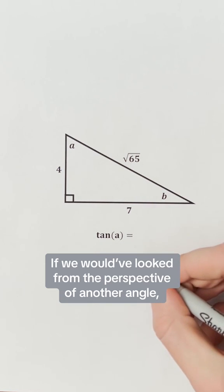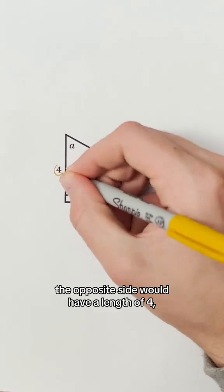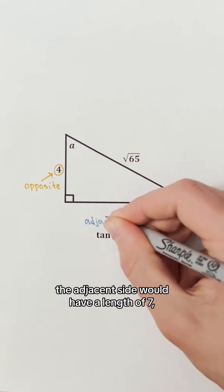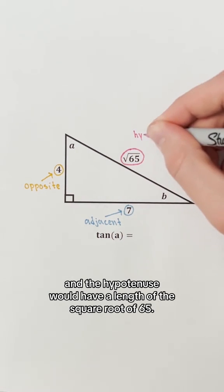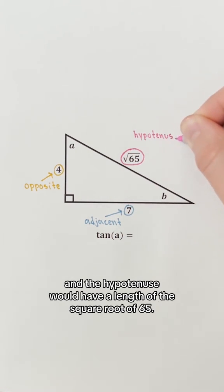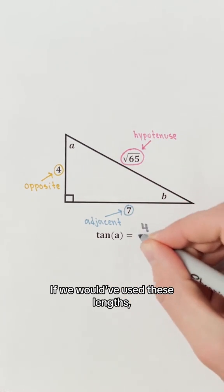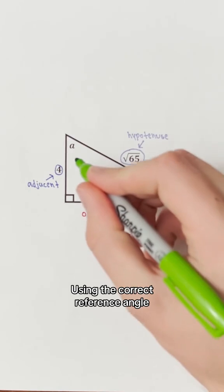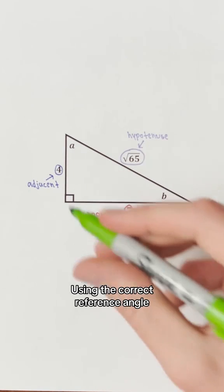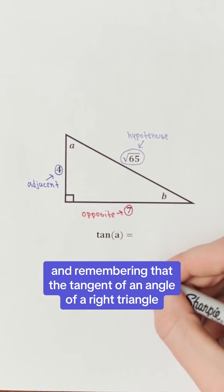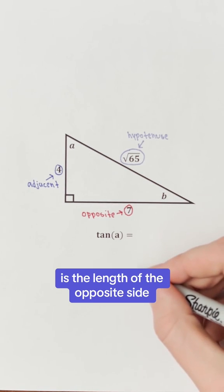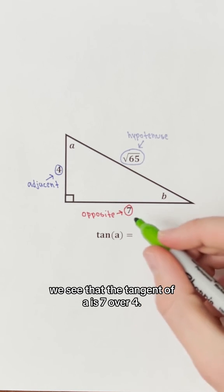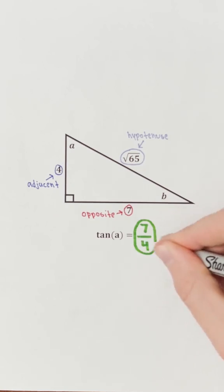If we would have looked from the perspective of another angle, like angle B, the opposite side would have a length of 4, the adjacent side would have a length of 7, and the hypotenuse would have a length of the square root of 65. If we would have used these lengths, we would have gotten the wrong ratio for the tangent of A. Using the correct reference angle and remembering that the tangent of an angle of a right triangle is the length of the opposite side to the length of the adjacent side, we see that the tangent of A is 7 over 4.